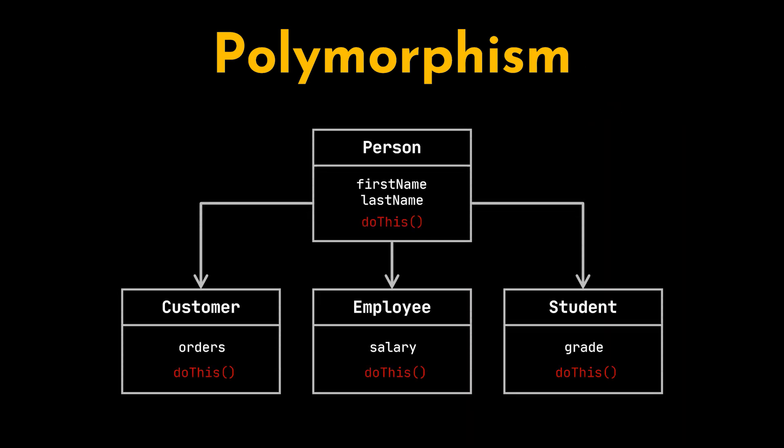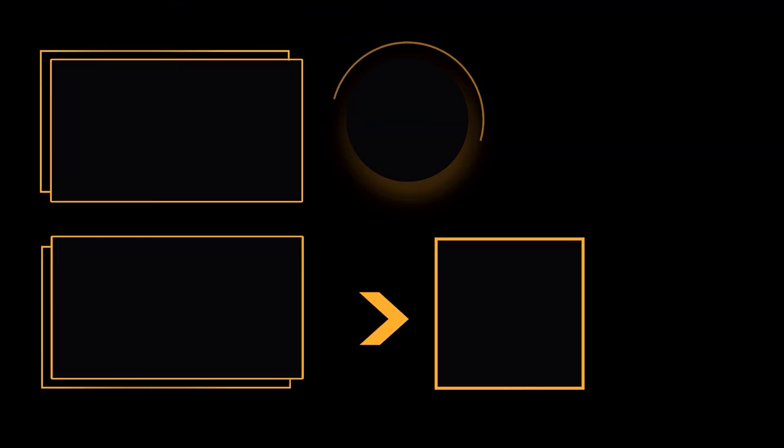Even if the person class becomes a parent class to a customer class, employee class, and student class, and the method is overridden by all these classes, when objects are created using all these classes and are put inside the same list, the correct specialized behavior will always be called when this list is traversed. And that's it for this video. I hope it was helpful. Thank you guys for watching, take care, and I will see you in the next one.